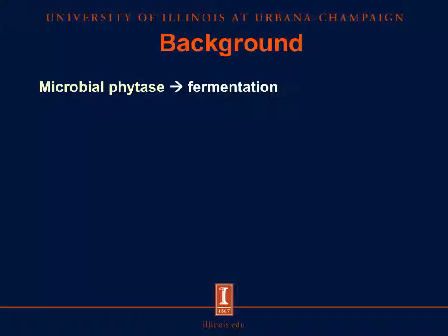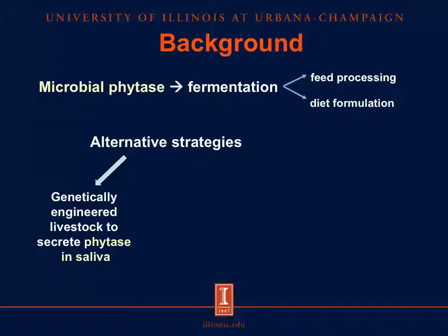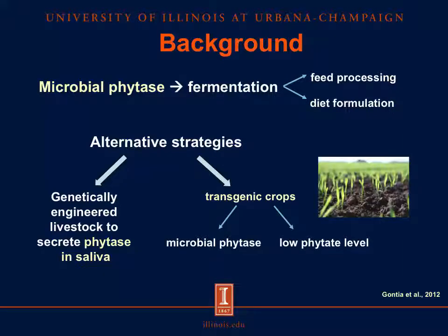Microbial phytase is commonly used as a feed additive and is produced by fermentation, which requires special care in feed processing and diet formulation. Therefore, the industry has been looking for an alternative phytase that could be cost-effective. One of these alternative strategies is producing genetically engineered livestock to secrete phytase in saliva. However, GMO pigs are not highly accepted by consumers. Another strategy is producing transgenic crops that express low phytate levels or microbial phytase. However, crops that express low phytate levels have problems with germination because phytate is necessary for it.